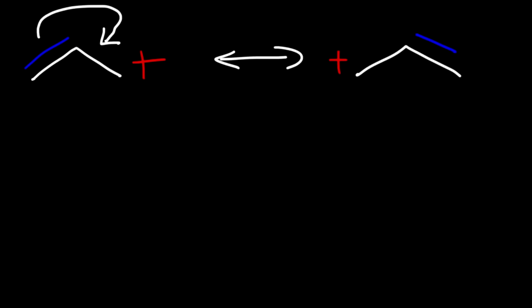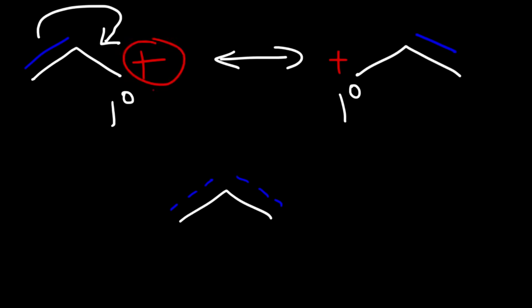Now, which of these structures is the major resonance contributor — the one on the left or the one on the right? Both of these are primary allylic carbocations, so they're equally stable. There is no major or minor resonance contributor in this example. The resonance hybrid is a blend of these two resonance structures, so the pi bond is shared among the three carbon atoms, and the positive charge is shared between the two end carbon atoms — each carrying a partial positive charge, or half of a positive charge.